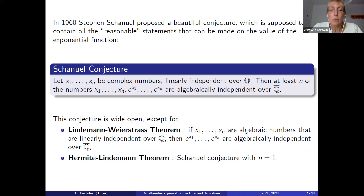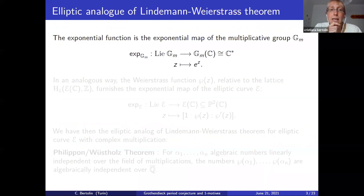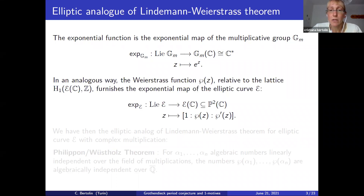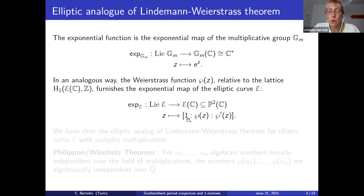We can look at what happens if instead of the exponential function we use an elliptic curve. I recall that the exponential function is the exponential map for the multiplicative group Gₘ: we go from the Lie group of Gₘ to ℂ* sending z to eᶻ. In the elliptic context, we use the Weierstrass ℘ function in order to embed the elliptic curve in ℙ², sending z to (1 : ℘(z) : ℘'(z)).